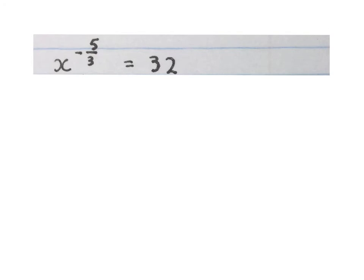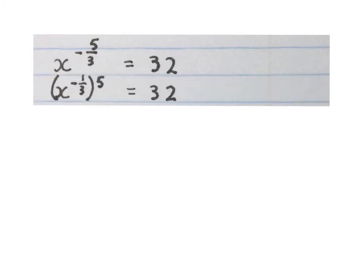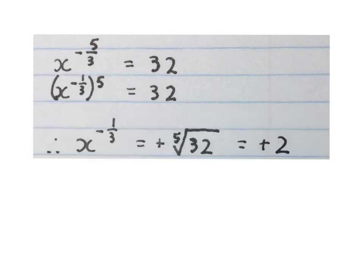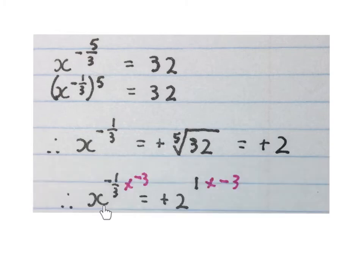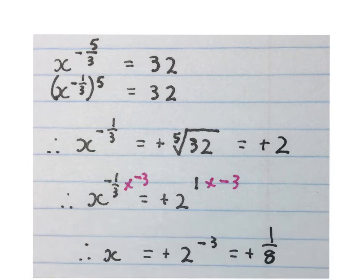Here is our next equation. We have to solve for x. We break up the rational exponent, making it minus a third to the power of 5. To get rid of the power of 5, we take the fifth root of both sides and end up with x to the power of minus a third equals plus 2. Now to get x alone, we multiply the exponent by minus 3 on both sides. Then we get x equals plus 2 to the power of minus 3, and that means x equals plus one eighth.